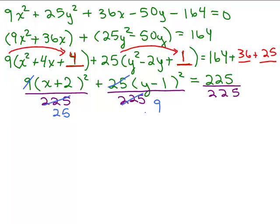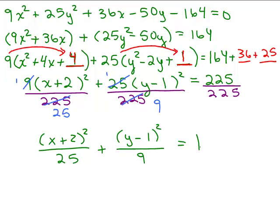So these are now 1's and how convenient because that's what I want, I want the numerators not to have coefficients in front of those parentheses, (x + 2)² / 25 + (y - 1)² / 9 = 1.